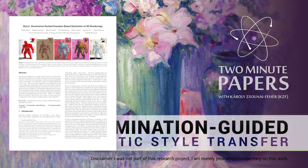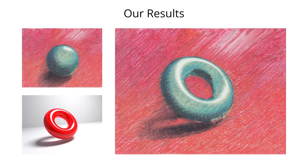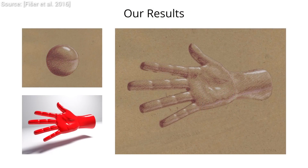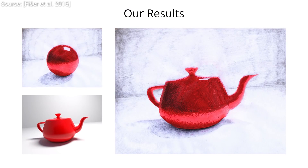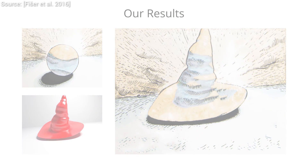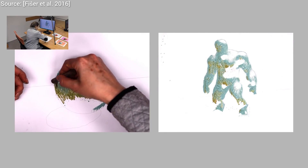Dear Fellow Scholars, this is Two Minute Papers with Károly Zsolnai-Fehér. Earlier, we have talked quite a bit about a fantastic new tool that we called Artistic Style Transfer. This means that we have an input photograph that we'd like to modify, and another image from which we'd like to extract the artistic style. This way, we can, for instance, change our photo to look in the style of famous artists.